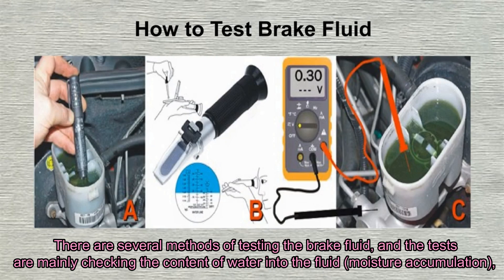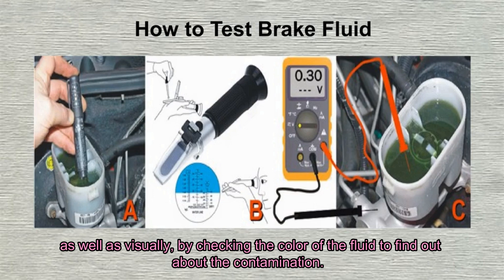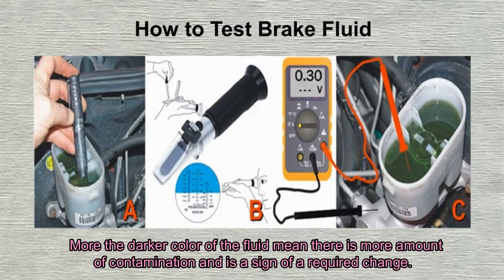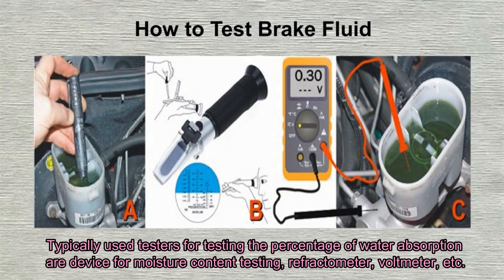There are several methods of testing the brake fluid. The tests are mainly checking the content of water in the fluid, as well as visually checking the color of the fluid to find out about contamination. The darker the color of the fluid, the more contamination is present — a sign that a change is required. Commonly used testers include devices for moisture content testing, a refractometer, a voltmeter, etc.